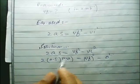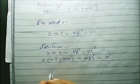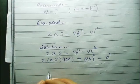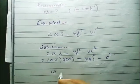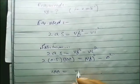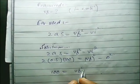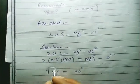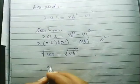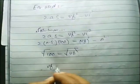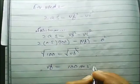Let's solve this. 2 multiplied by 0.5 equals 1. 1 multiplied by 100 equals 100. So VF squared equals 100. To remove the square, take the square root on both sides. VF equals 10 meter per second.